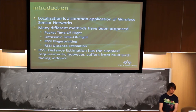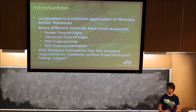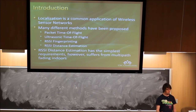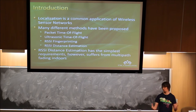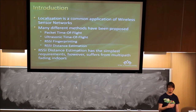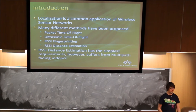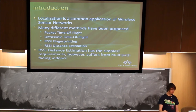This project is mostly for localization applications — a very common application of wireless sensor networks used in robotics and anything where you want to do tracking based on signal strength for wireless signal. Different methods are used currently. Very common methods include packet time of flight, sending packets along with an ultrasonic sensor using time of flight from sound, RSSI fingerprinting — which is received signal strength indicator over a map — and RSSI distance estimation, which just estimates distance from how much the signal has decayed over displacement between two transmitters. RSSI distance estimation has the simplest requirements.